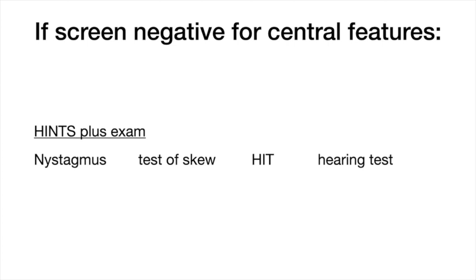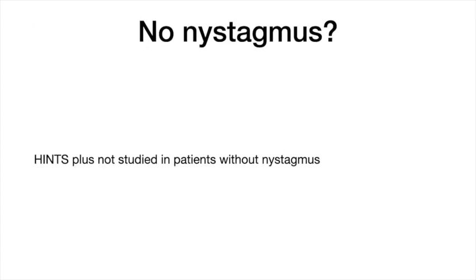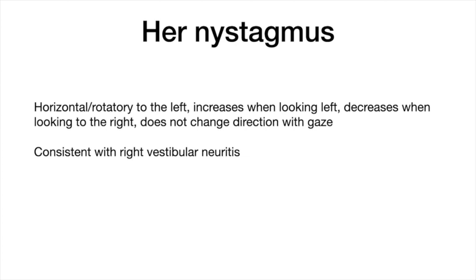All four components must have a peripheral result in order to call the overall HINTS-Plus exam peripheral. The first component is nystagmus — a spontaneous nystagmus must be present to apply the HINTS-Plus exam; if your patient does not have nystagmus, don't do the HINTS-Plus exam. Looking straight ahead, it's horizontal with the fast component beating to the left. When she looks to the left, the magnitude increases; when she looks to the right, it decreases but is still beating to the left. There's no vertical nystagmus when she looks up. This is a HINTS-Plus peripheral result. If the nystagmus changed direction depending on which direction the patient was gazing, that would be a HINTS-Plus central result.